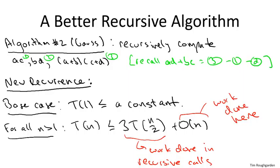Secondly, I'm ignoring exactly what the constant factor is in the linear work done outside of the recursive calls. Indeed, it's a little bit bigger in Gauss's algorithm than it is in the naive algorithm with four recursive calls, but it's only by a constant factor, and that's going to be suppressed in the big O notation.